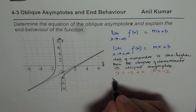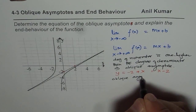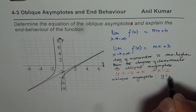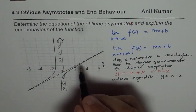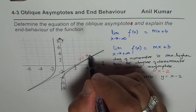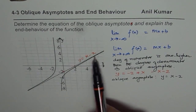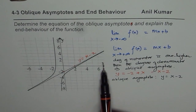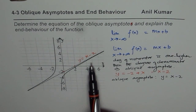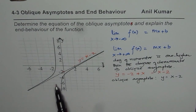So the oblique asymptote is y equals x minus 2. This line is y equals x minus 2. The function is really approaching this line as x approaches infinity or minus infinity, and that is why we say there is an oblique asymptote for the graph of this function.